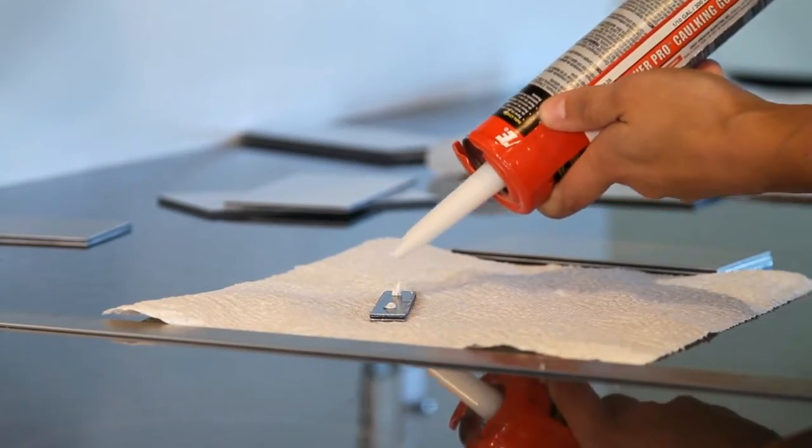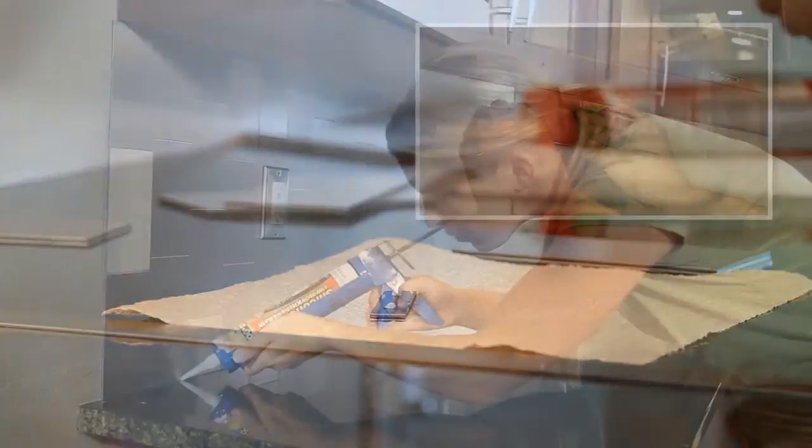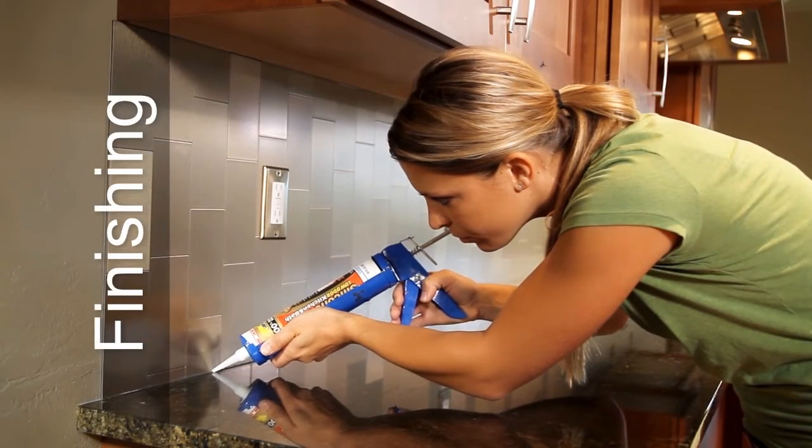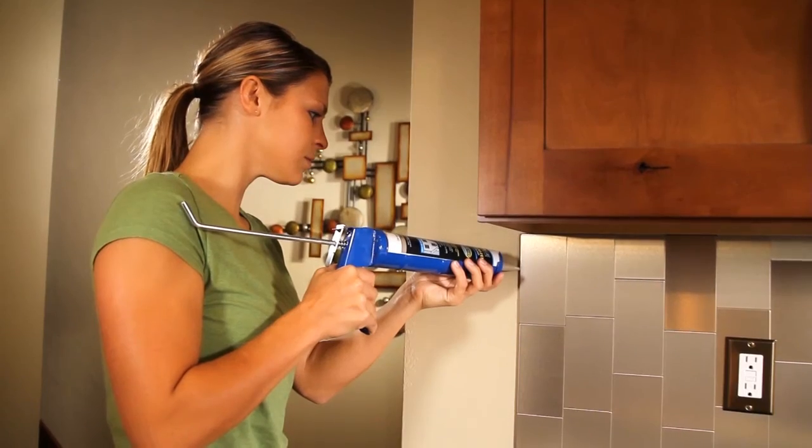Use construction adhesive for cut pieces of Aspect that are less than a third of a full tile. If desired, apply a one-eighth inch bead of caulk or silicone sealant in the gap under the bottom row. Wipe off excess sealant. Choose clear or colored caulk according to your preference.